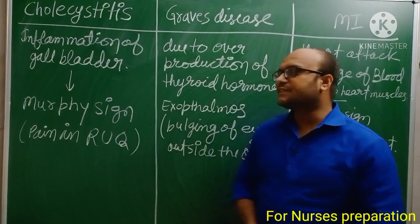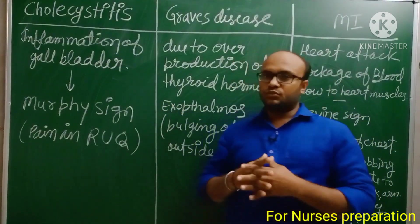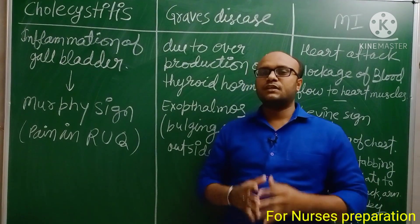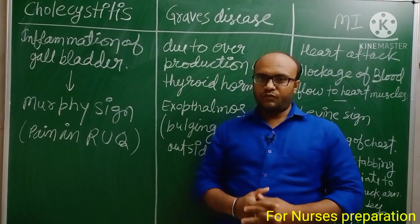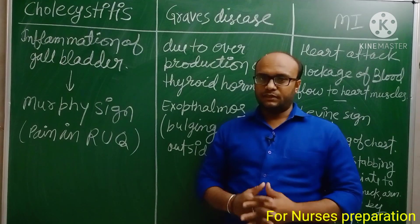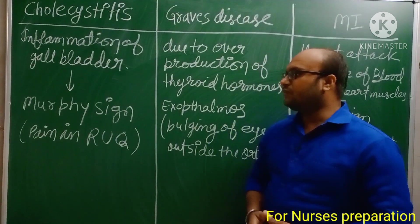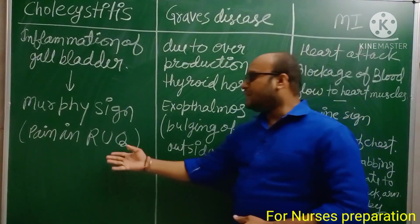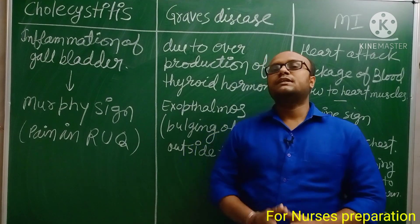The next disease is Cholecystitis, which means inflammation of the gallbladder. The most important cause is gallstones or stone formation in the gallbladder. The gallbladder stores bile, which is secreted by the liver and helps in emulsification of fat. The important sign of cholecystitis is Murphy's sign — pain in the right upper quadrant of the abdomen.